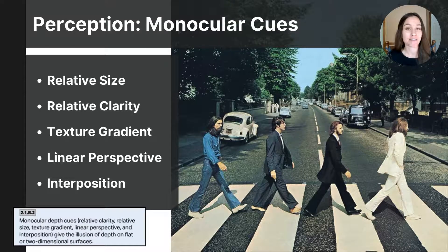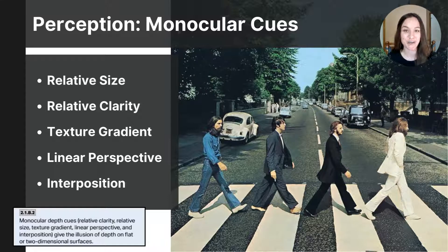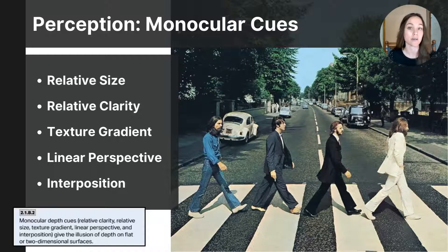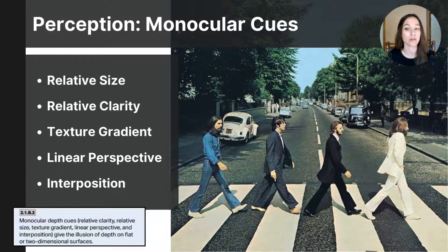The College Board wants students to be able to identify five monocular cues: relative size, relative clarity, texture gradient, linear perspective, and interposition. Let's use the iconic photograph of Abbey Road and the Beatles crossing the crosswalk as our example. The first is relative size, which helps us perceive depth by showing that objects closer to us appear larger, even if they are the same size as objects farther away. In the Abbey Road photograph, the cars lining the street are all the same size in reality, but the cars closer appear larger than those farther away — this is relative size.